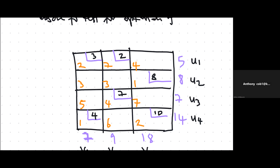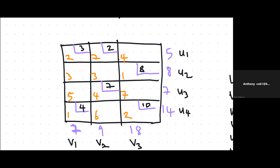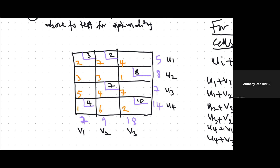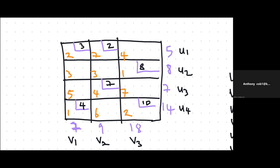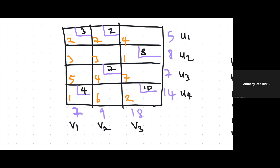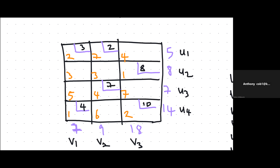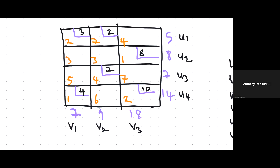This is the solution we obtained using that method. Once you get your initial solution, you need to label your rows as Ui's and your columns as Vj's. So we have Row 1 as U1, Row 2 as U2, then U3 and U4. Then V1 for column 1, V2, and V3.